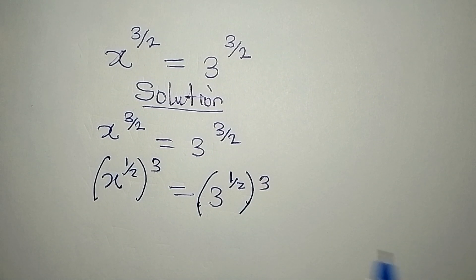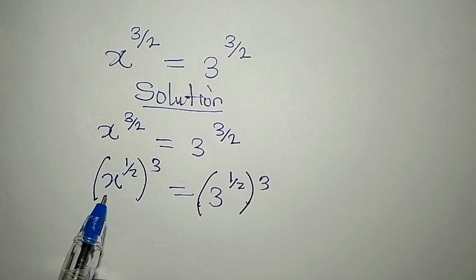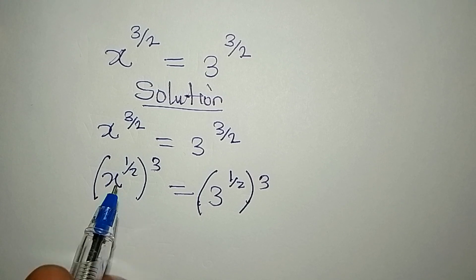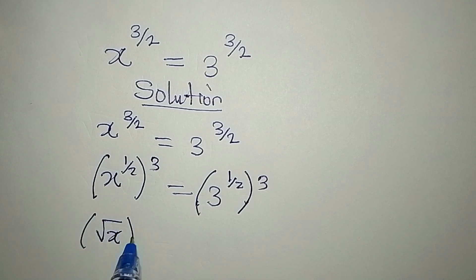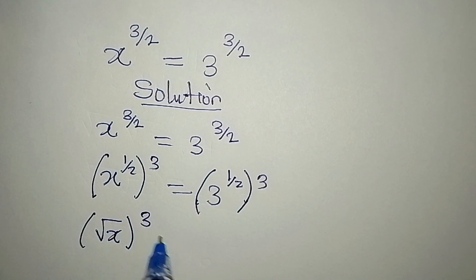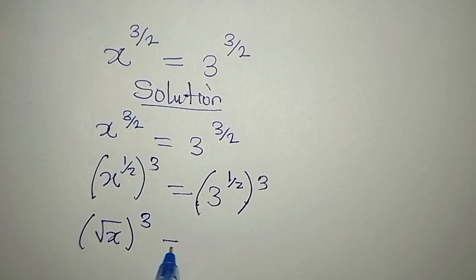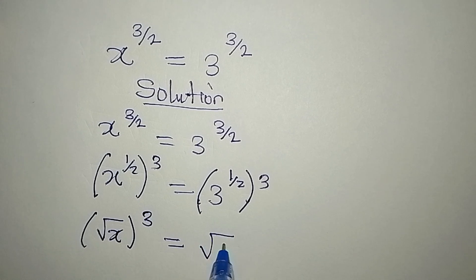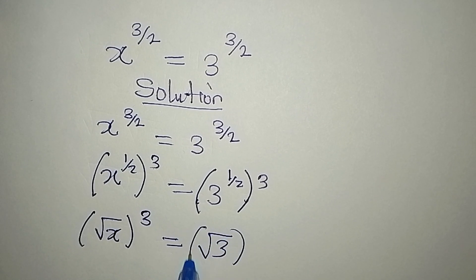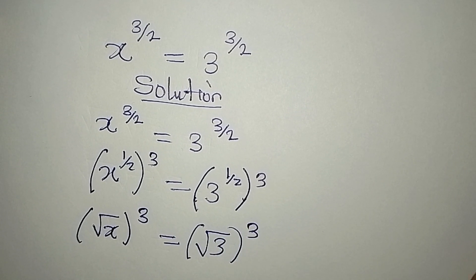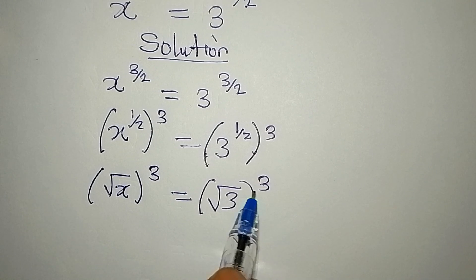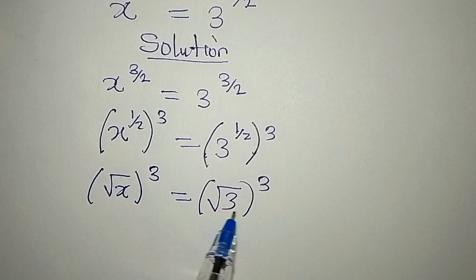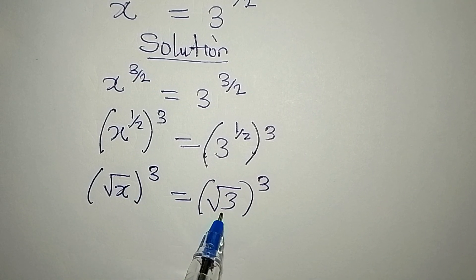When a number is raised to the power of 1 over 2, it means the square root of that number. So here we have square root of x, to the power of 3, which is equal to the square root of 3, to the power of 3.